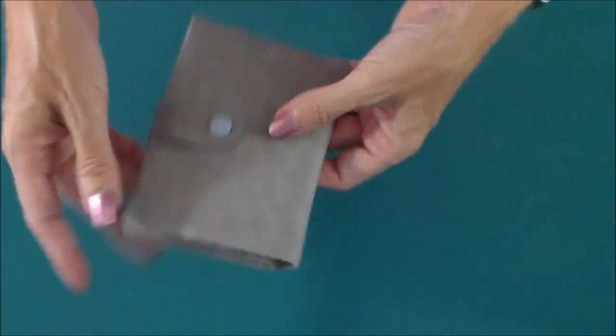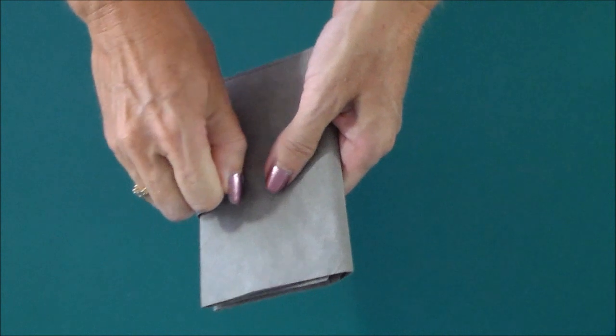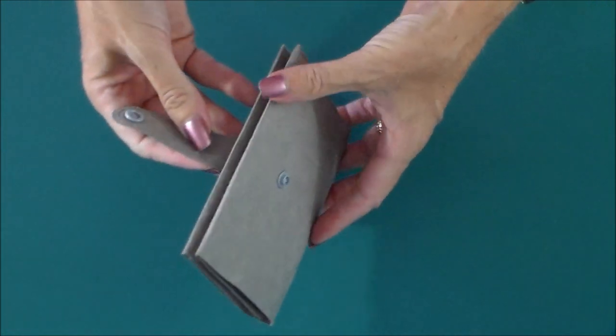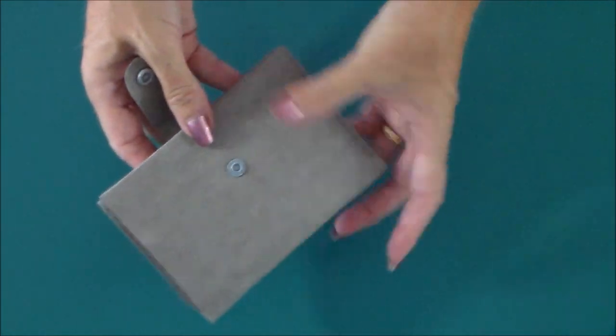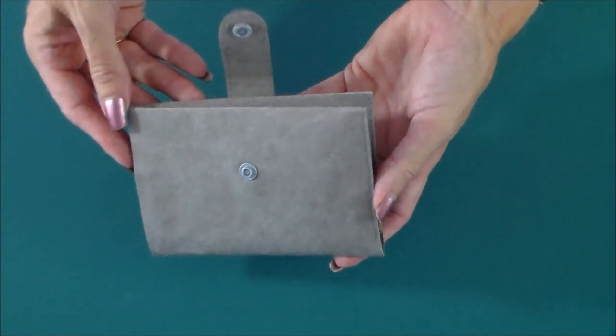This is our Minimalist Wallet. It has a snap closure on the front and it's made with a new product called Craftex, which you might not have come across before.